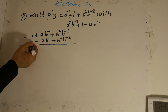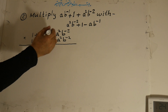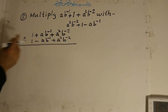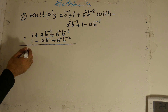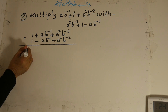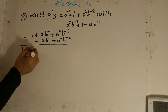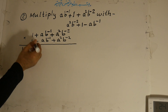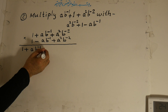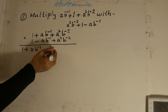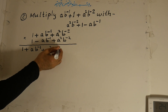Now, what we do? We multiply the first term with all terms of the second, then the second, then the third. Positive times positive is positive — 1 times 1 is 1. Positive times positive is positive — 1 times ab to the power of negative 1 is ab to the power of negative 1. Positive times positive is positive — 1 times a to the power of 2 b to the power of negative 2 is a to the power of 2 b to the power of negative 2.